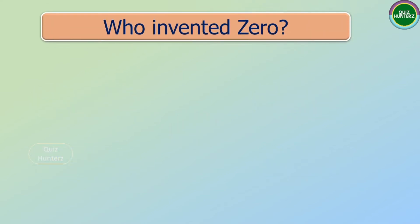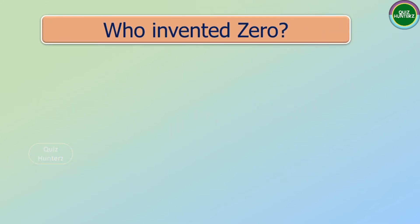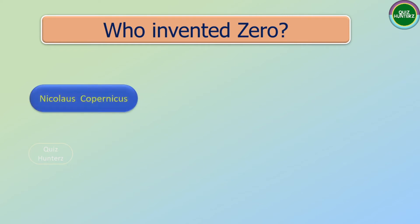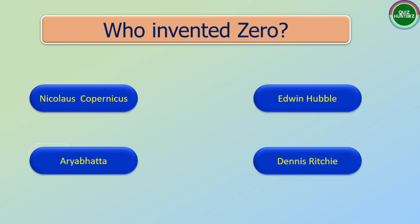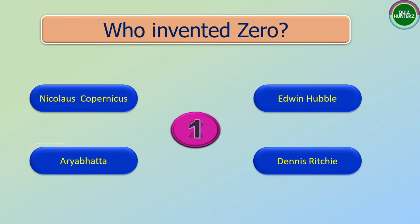Next question: Who invented zero? The options are: Nicholas Copernicus, Edwin Hubble, Aryabhatta, Dennis Ritchie. And the correct answer is Aryabhatta.